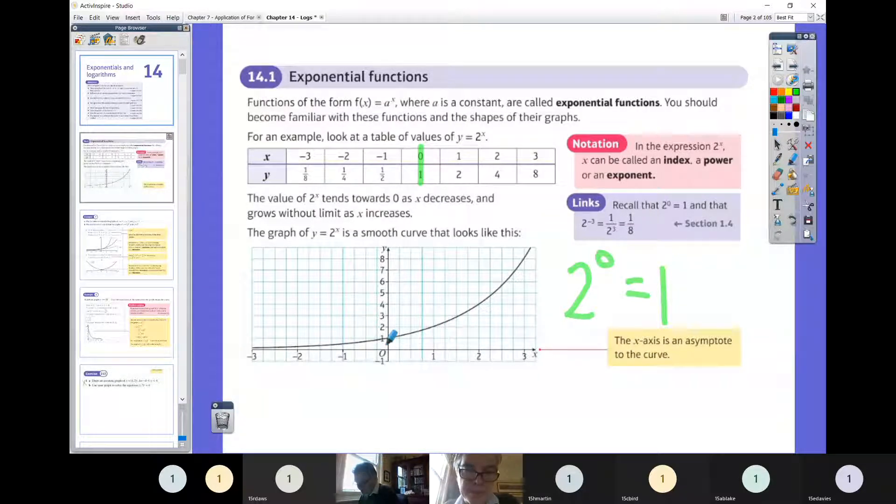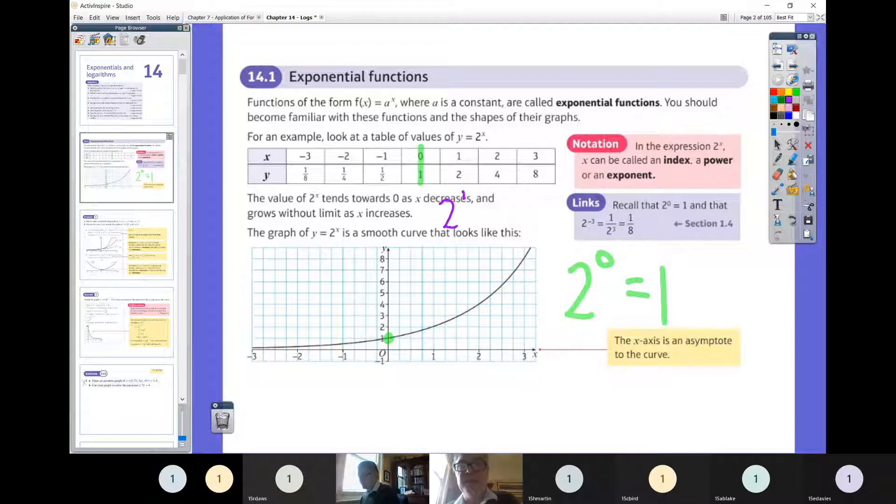You're always going to have these exponential graphs going through the coordinate (0, 1), whether it's 2 to the power of x or 4 to the power of x or 6 to the power of x. That base number won't make a difference. Anything to the power of 0 is 1. Unless the graph is being transformed, (0, 1) will be your starting point. As you go to the right hand side, 2 to the power of 1 is 2, 2 to the power of 2 is 4, 2 to the power of 3 is 8. You can see it's going to sharply go upwards to the right hand side.